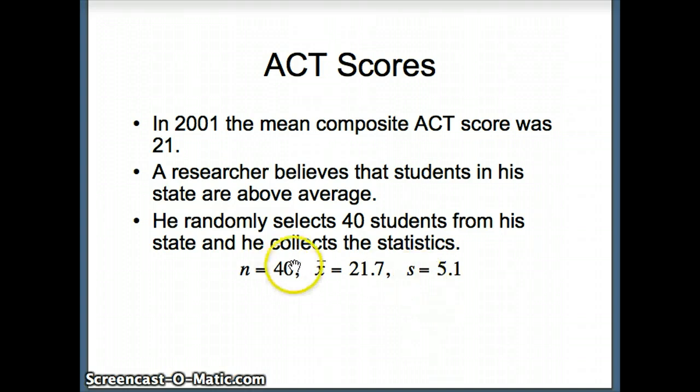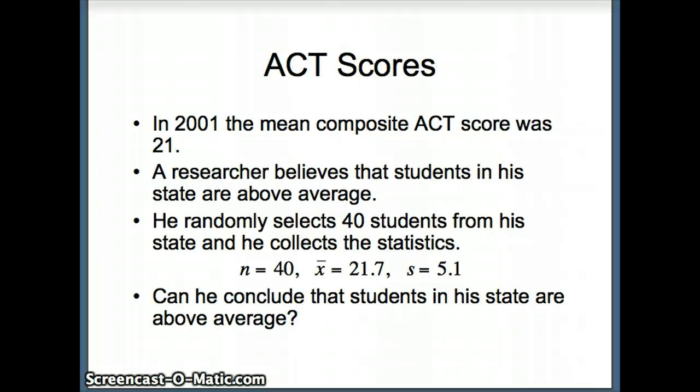From 40 students, the average was 21.7 and the standard deviation is 5.1. Remember, when you flip a coin ten times you expect five heads, but you could get seven just by random chance. If the mean is 21, could we get 21.7 just by random chance, or is that such an extreme number that the mean probably wasn't 21?